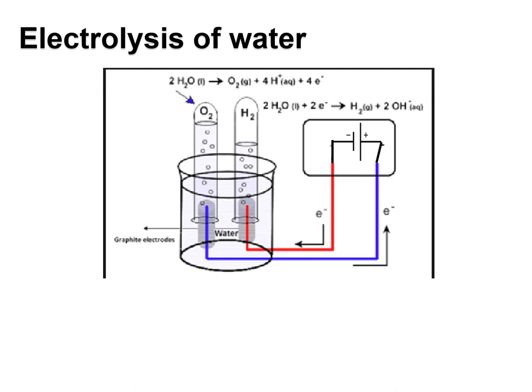Here is an electrolytic cell set up to perform the electrolysis of water—its decomposition into its elements. This is the opposite of a fuel cell, where the spontaneous combination of H₂ and O₂ produces electricity (a voltaic cell). This electrolytic cell is non-spontaneous; we need to provide energy to drive the reverse reaction, the decomposition of water. We know it's an electrolytic cell because we see the battery symbol, indicating a non-spontaneous reaction.